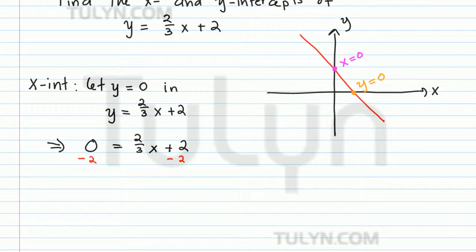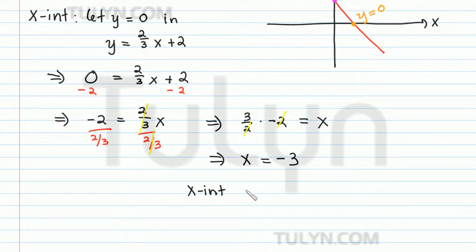Let's subtract two from each side of the equation. We have negative two equals two-thirds x. And then we want to solve for x, so we want to divide both sides by two-thirds. Dividing by two-thirds is the same thing as multiplying by the reciprocal of two-thirds, which is multiplying by three-halves. So here, the two-thirds cancels out, and on the left side, we have three-halves times negative two equals x. So the negative two and the two cancel out when we do the operation, and so x equals negative three.